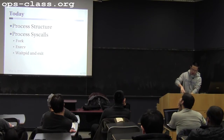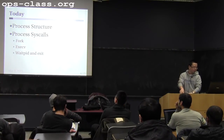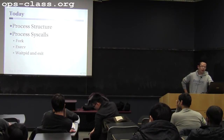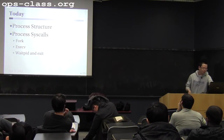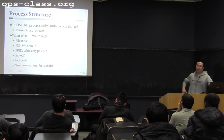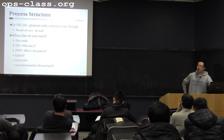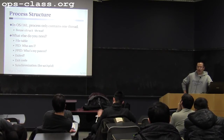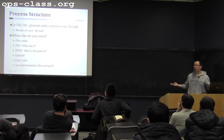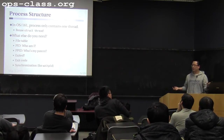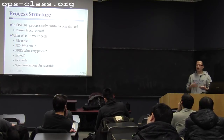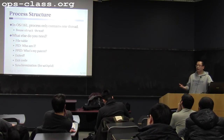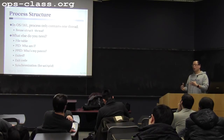So today we're going to focus mostly on the process syscalls. We will first talk about the process structure, then go over the process syscalls: fork, execv, getpid, and exit. In this particular OS — OS/161 — each process will only contain one thread. As discussed in lecture, other operating systems more generally allow a process to have multiple threads. But in this particular OS, one process has only one thread.